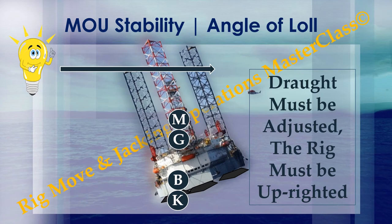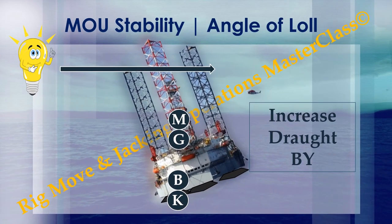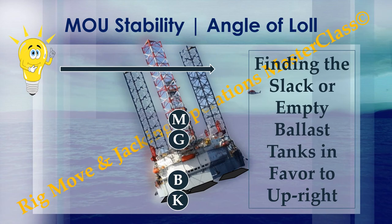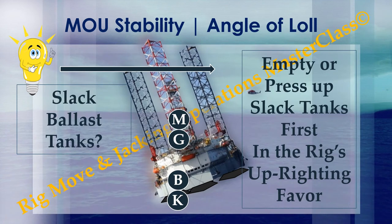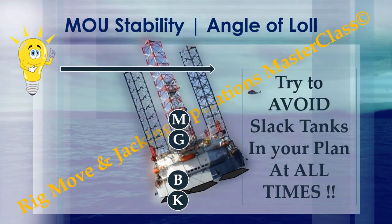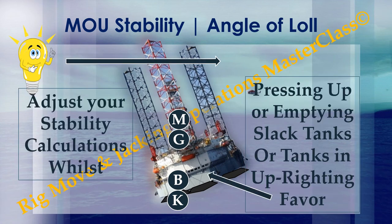Increase draft by finding the slack or empty ballast tanks in favor of uprighting the rig. Empty or press up slack tanks first in the rig's uprighting favor, but as close as possible to midships, increasing to a safe draft. Try to avoid slack tanks in your plan at all times. Adjust your stability calculations whilst pressing up or emptying slack tanks or tanks in the uprighting favor.